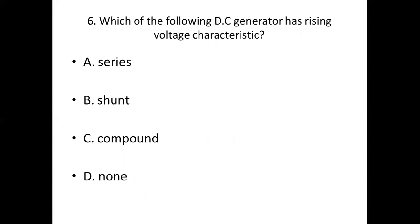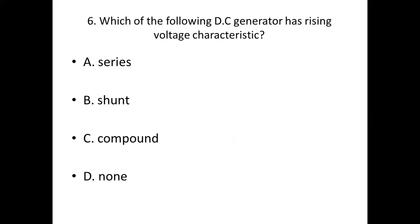Sixth bit: Which of the following DC generators has rising voltage characteristic? Option A: Series. Option B: Shunt. Option C: Compound. Option D: None. Answer — Option A: Series.